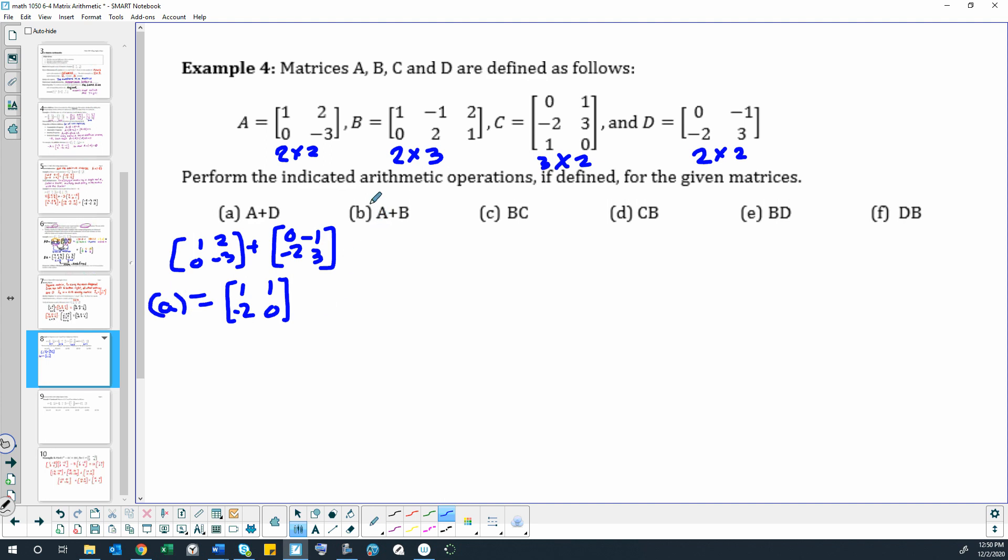Part B, we're adding matrix A and matrix B together. We can't. This is undefined. Why is it undefined? Because they are different dimensions. You cannot add together matrices of different dimensions. Okay, that's all of our adding problems.